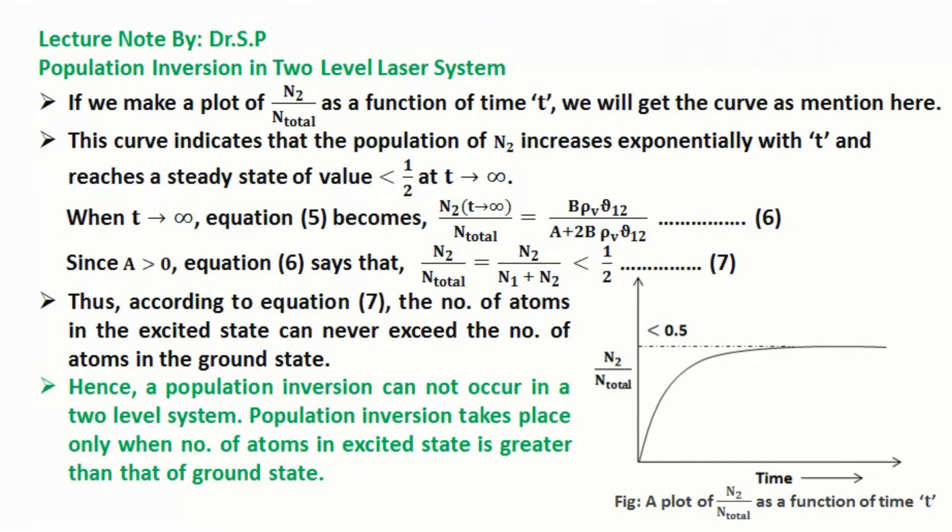When t tends to infinity, equation 5 becomes equation 6. Since A is greater than 0, equation 6 says that N2 by N total equals N2 by N1 plus N2, which is less than 1 by 2 as mentioned in equation 7. Thus, according to equation 7, the number of atoms in the excited state can never exceed the number of atoms in the ground state.